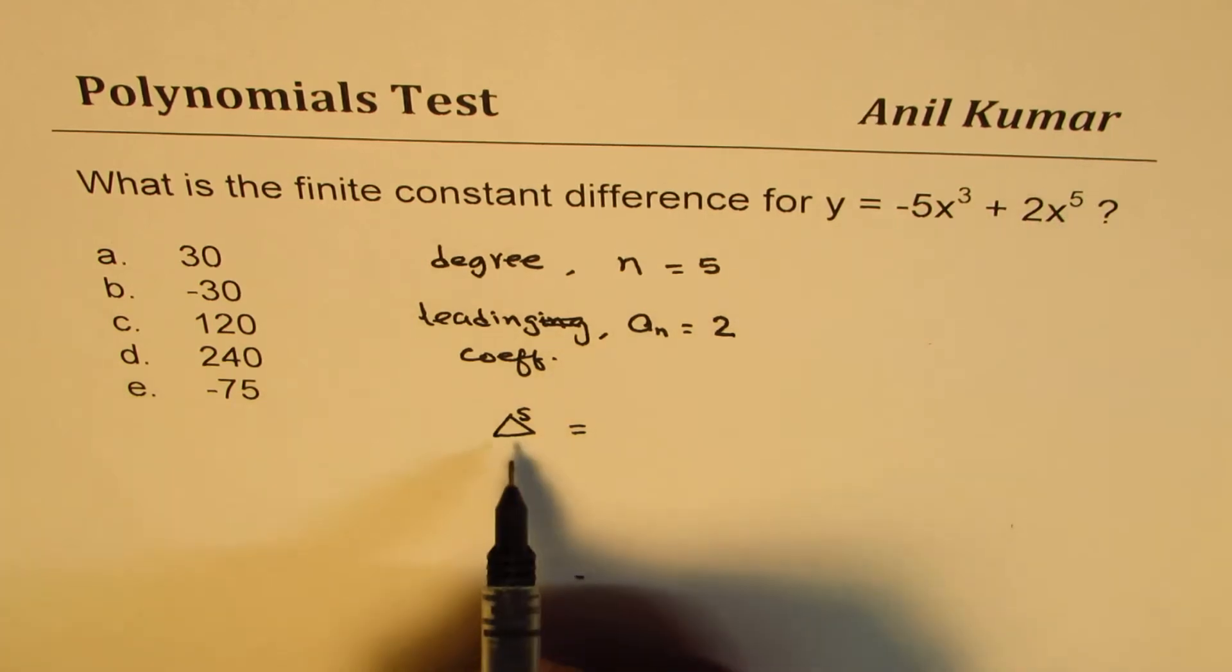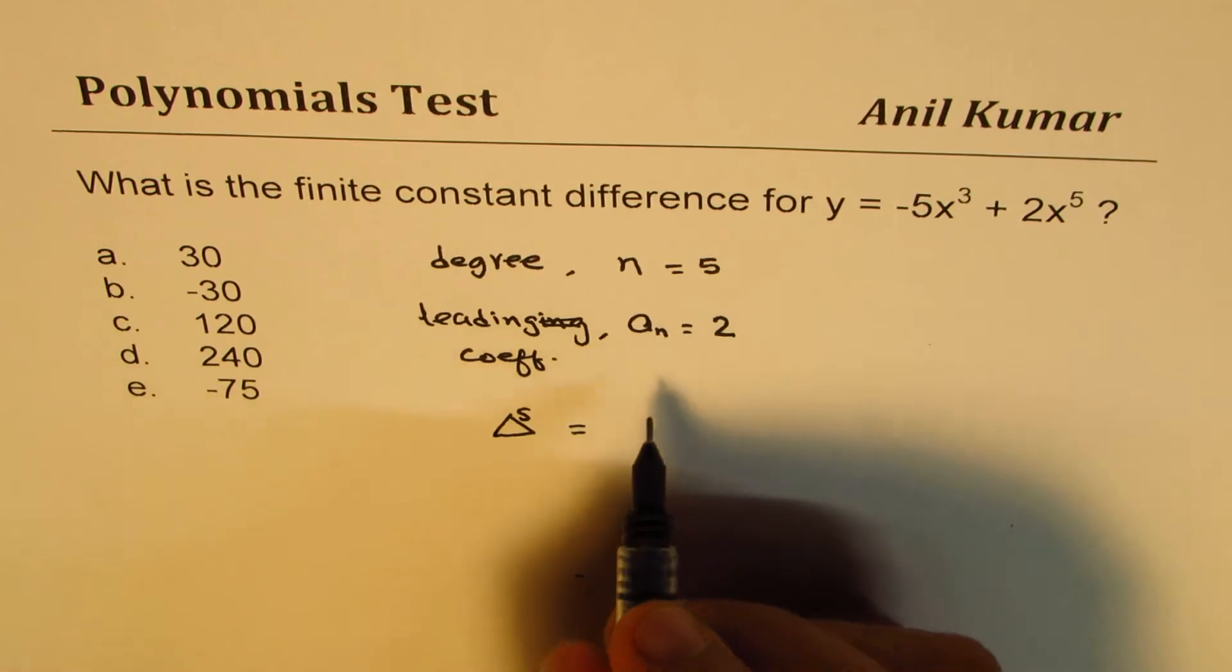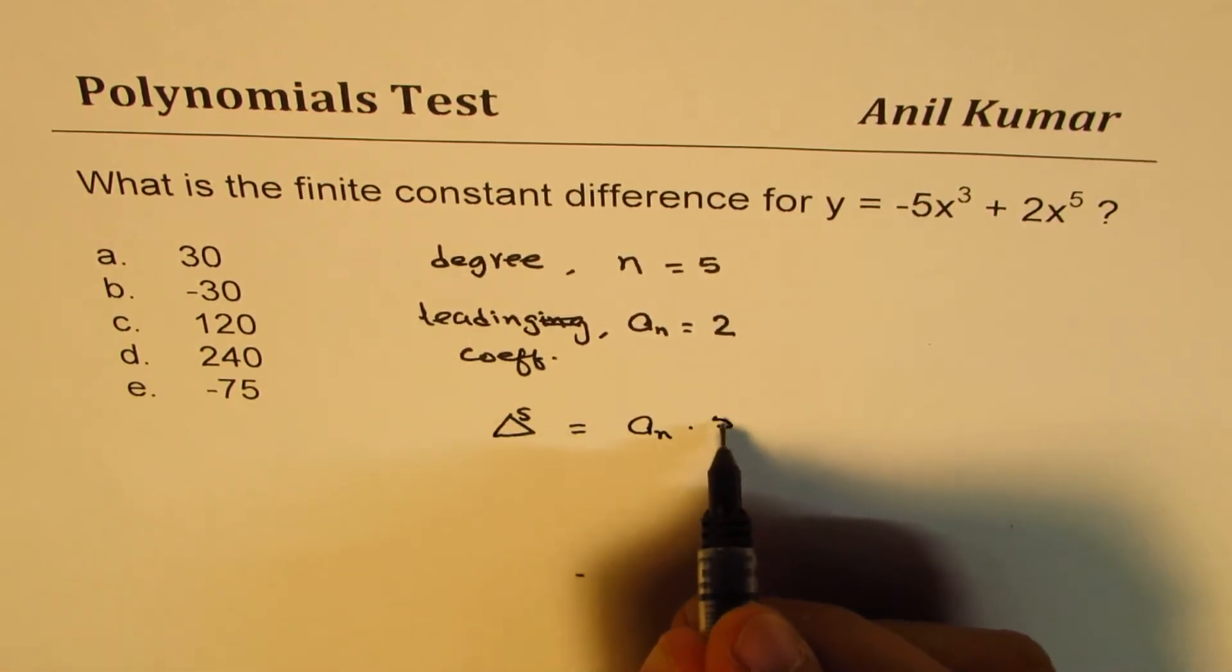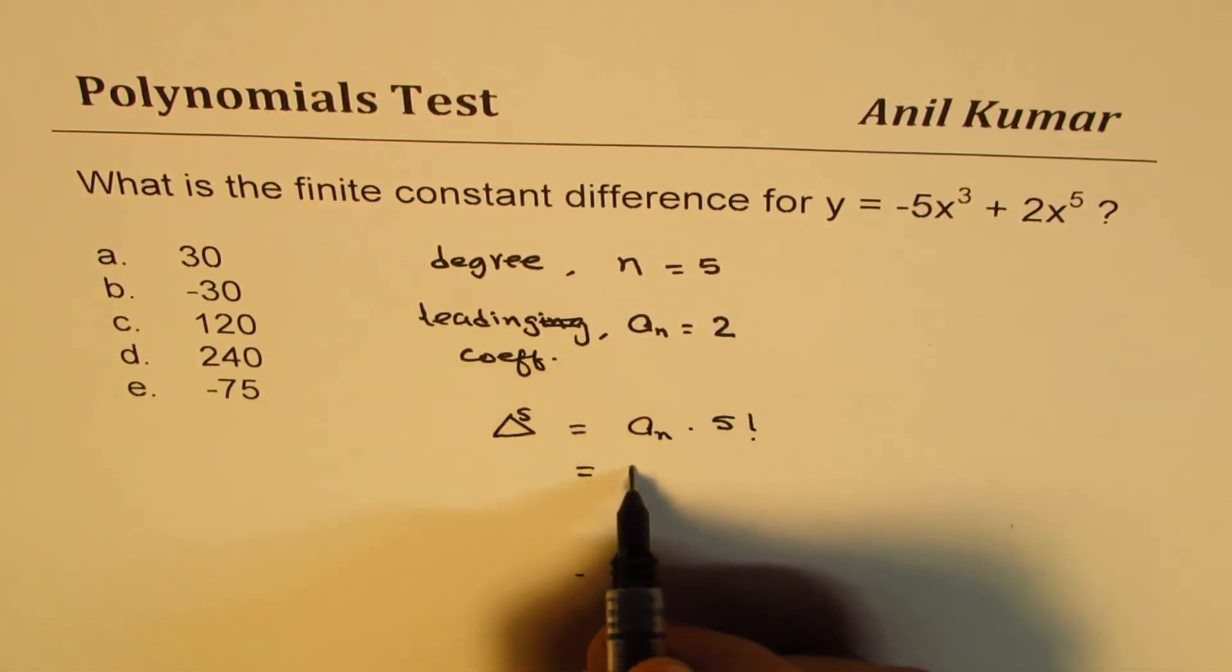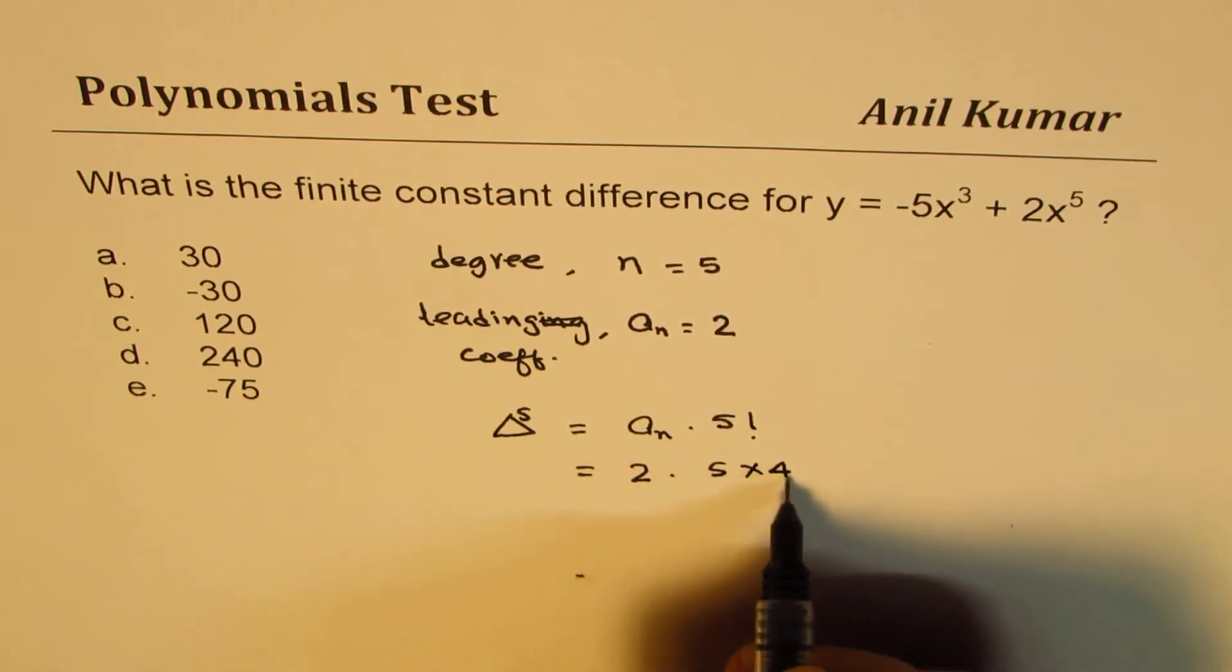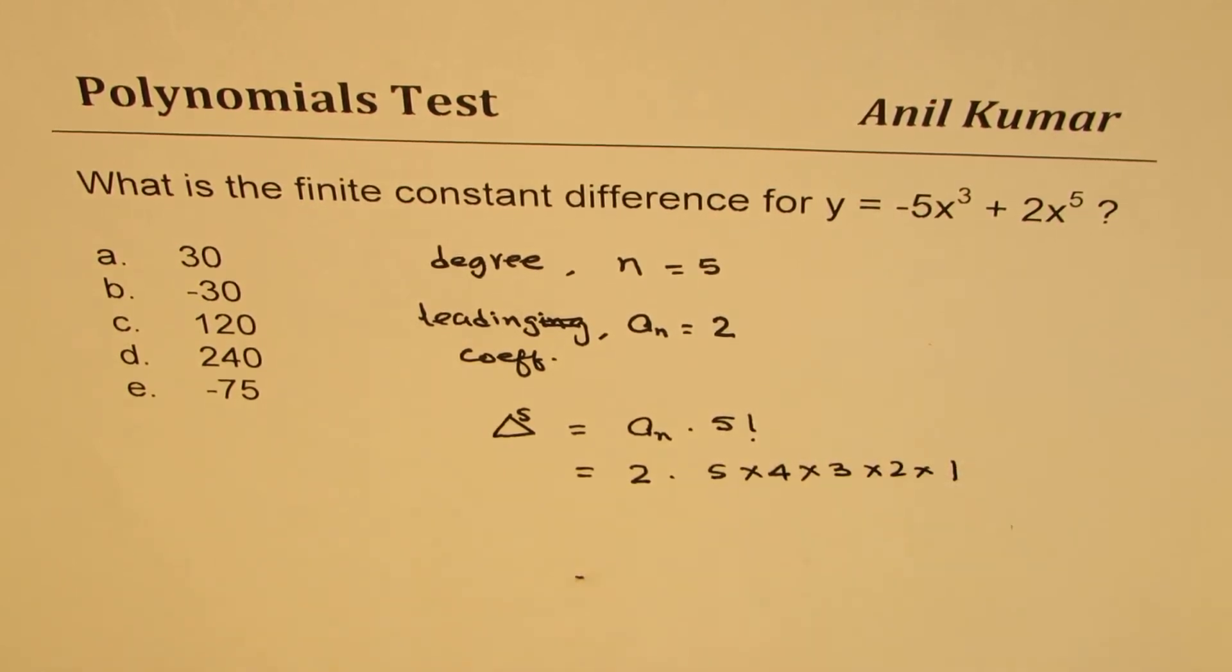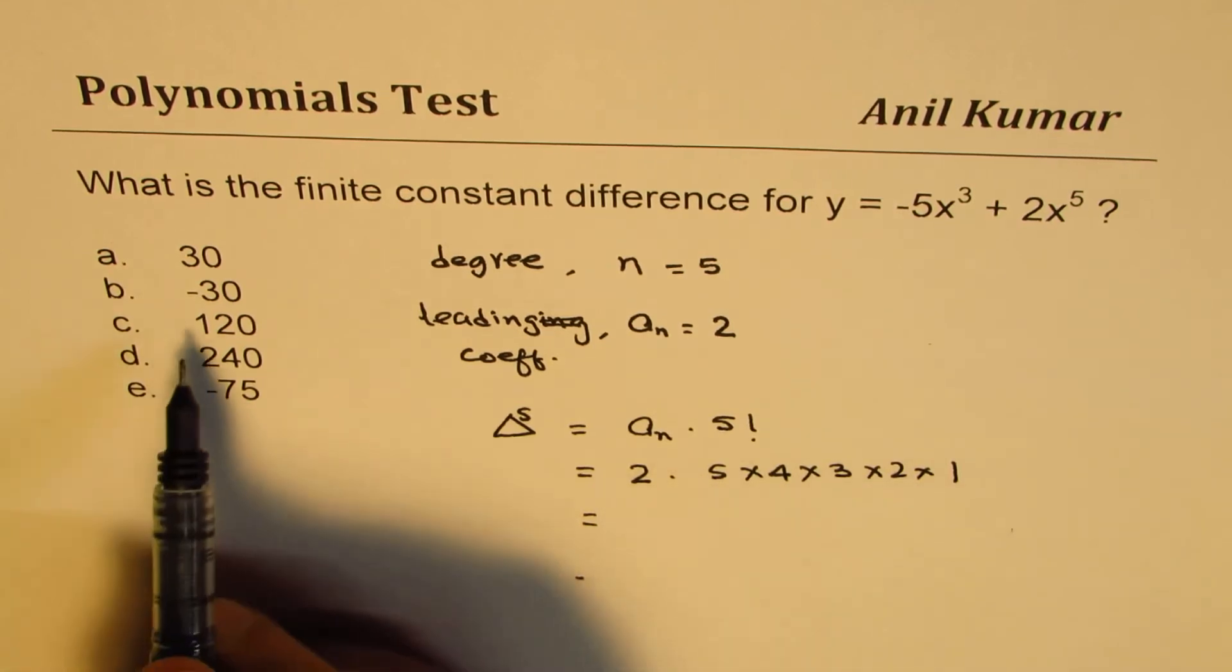And the value of this will be whatever the leading coefficient is, a_n, times 5 factorial. Now in our case a_n is 2, right, and 5 factorial means 5 times 4 times 3 times 2 times 1, correct, so you can calculate this to find the value.